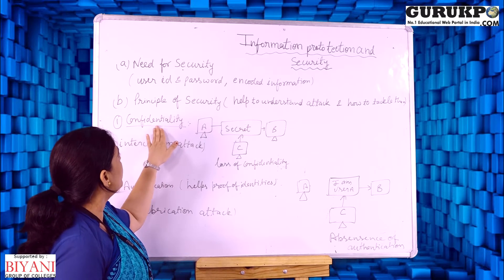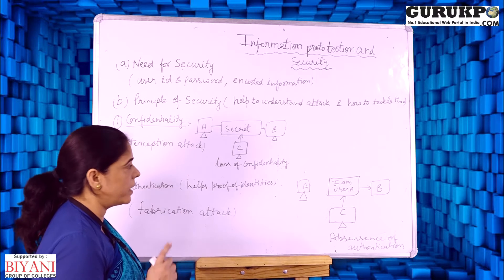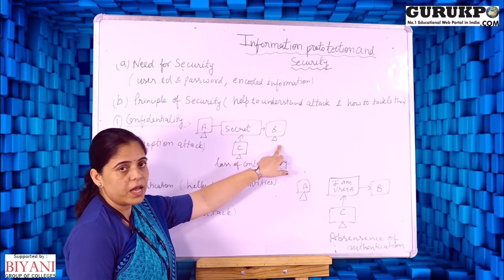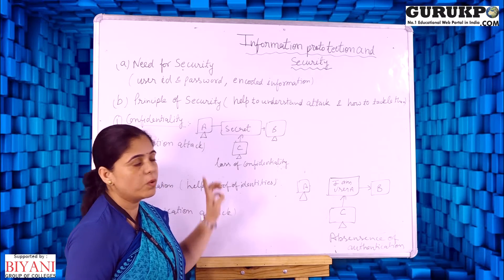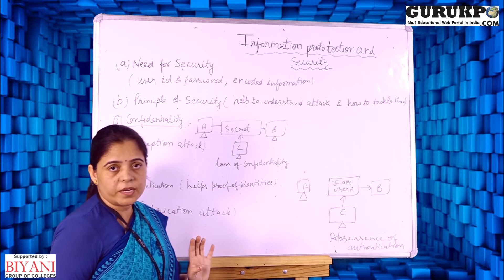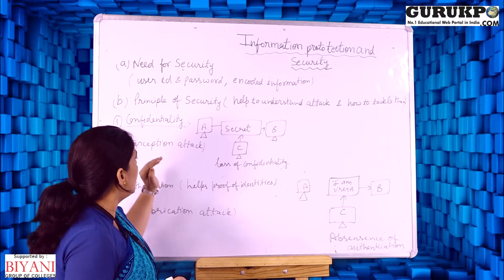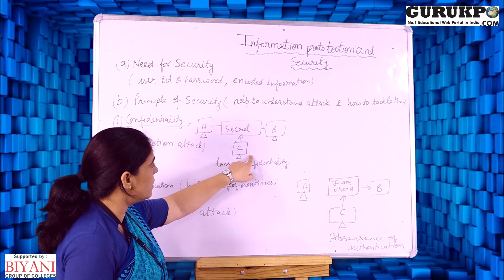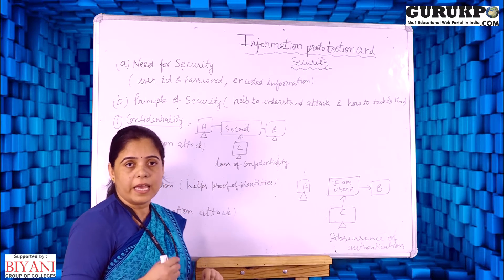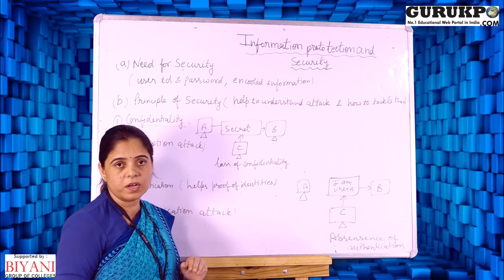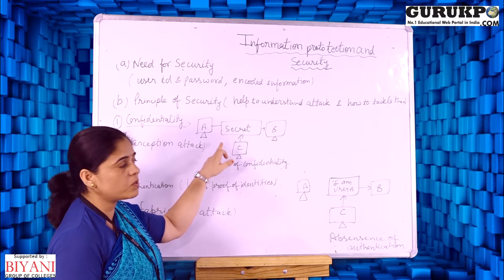The first principle is confidentiality. Suppose user A wants to transfer 100 rupees to B — this is confidential, placed in an envelope that only B can see and no one else. If user C accesses that amount, this is called loss of confidentiality. This type of attack is called an interception attack — C is intercepting the data of A.